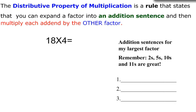One rule the third graders learned is called the distributive property of multiplication as a strategy to help them multiply numbers. It's a rule that states that you can expand a factor into an addition sentence and then you can multiply each of those addends by the other factor.